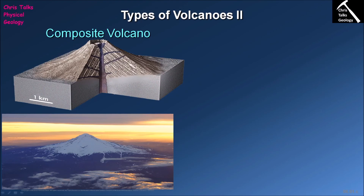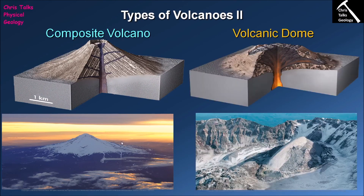Because material piles up close to the vent, composite volcanoes are very tall and it's not uncommon for them to form large mountains. In contrast, volcanic domes typically form from felsic lava — the most viscous and stickiest. It's actually quite difficult to extrude this lava because it doesn't move through the crust easily, so not huge amounts get extruded. Typically, volcanic domes are quite small — only a few hundred meters high and wide — making them pretty tiny by volcano standards.